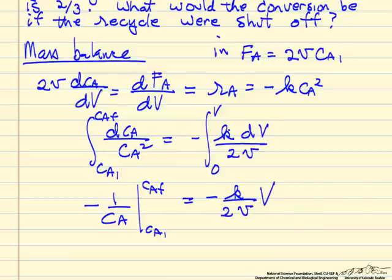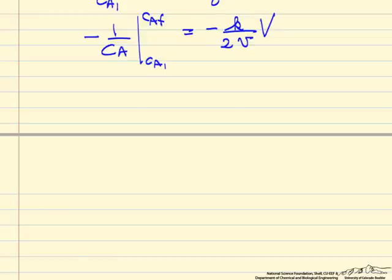V minus 0. So we can substitute in the limits, minus 1 over Ca final plus 1 over Ca1 equals minus K times V over 2 times the volumetric flow rate.